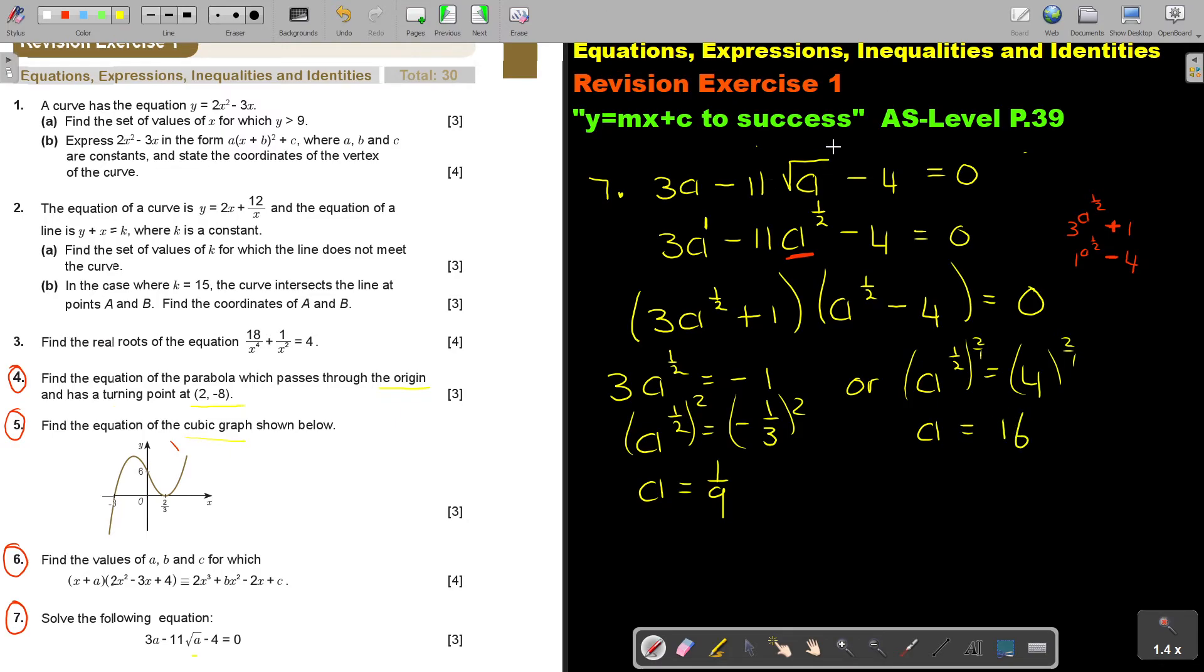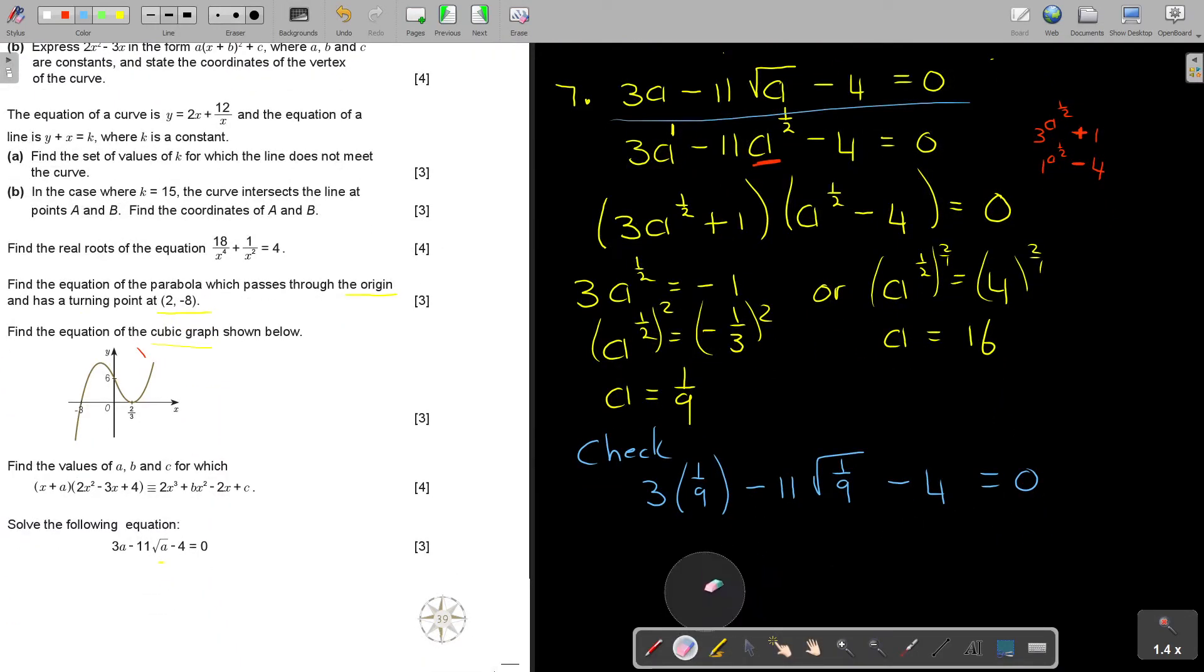I said if you see roots, if you see logs, you have to test. So let's do a check for both. And you have to go to the original. So go 3 times square root of 1 over 9 minus 11 times square root of 1 over 9 minus 4. So if it's 3 over 9 minus 11 times 1 over 3 minus 4, let's see if it's equal to 0. I'm getting negative 7 and a third, and that is not equal to 0. So let's do the other check.